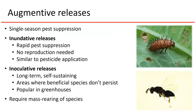An example of inoculative releases is the eulophid wasp Pediobius foveolatus, which attacks Mexican bean beetle larvae and pupae. The brown coloration on parasitized larvae indicates that inside the larva's body are wasp larvae that will eventually complete development and emerge as adult wasps. However, Pediobius doesn't survive cold winters in Maryland, so although it successfully reproduces throughout one cropping season and gives effective control of Mexican bean beetle, it needs to be re-inoculated every year. These kinds of releases essentially require mass rearing of whatever species, so farmers need to be able to buy them commercially at an affordable rate.